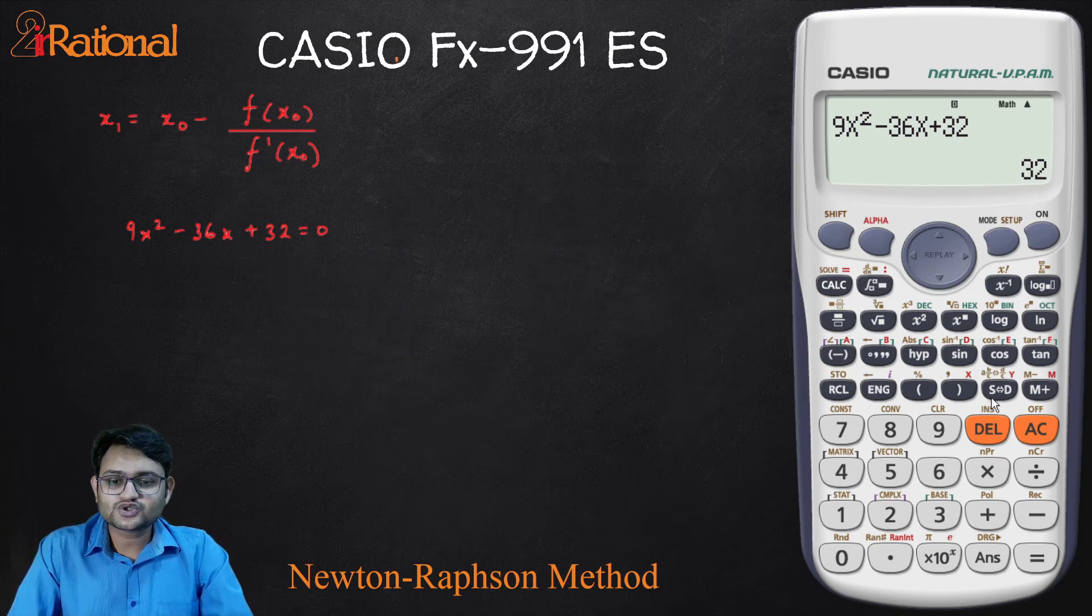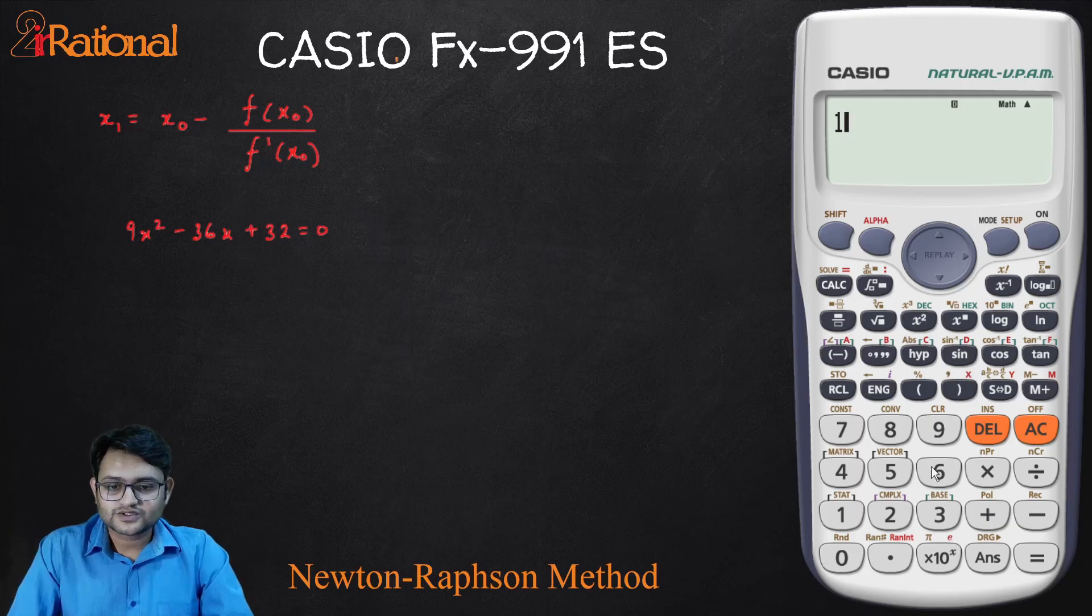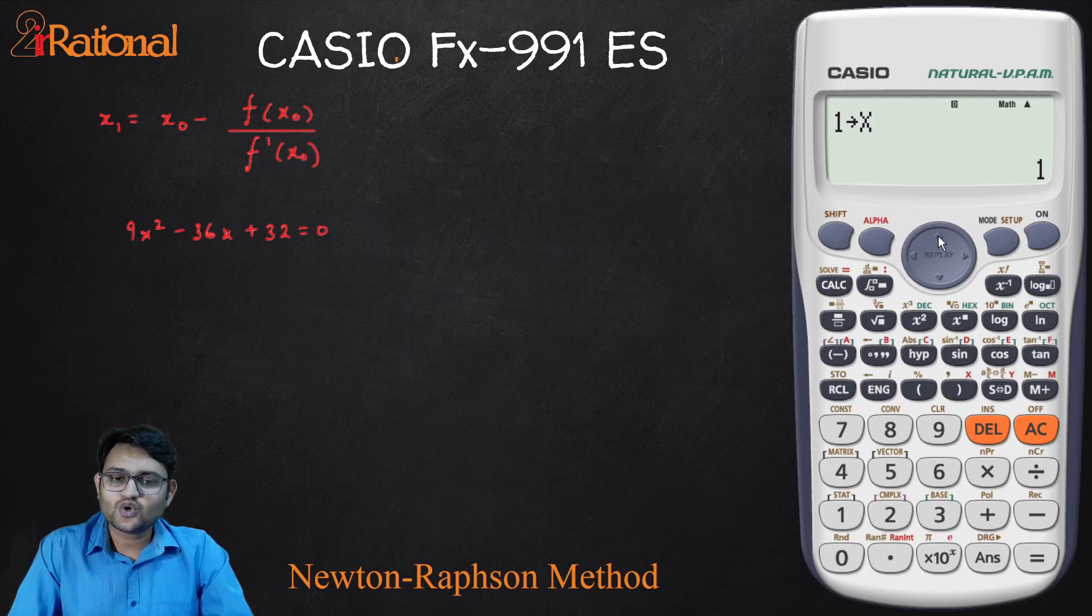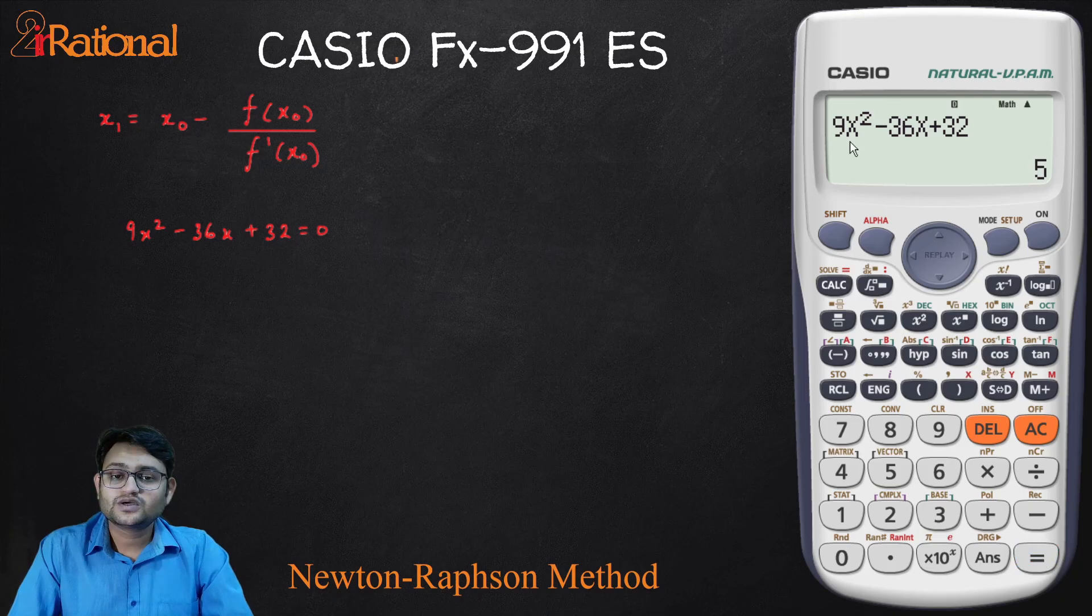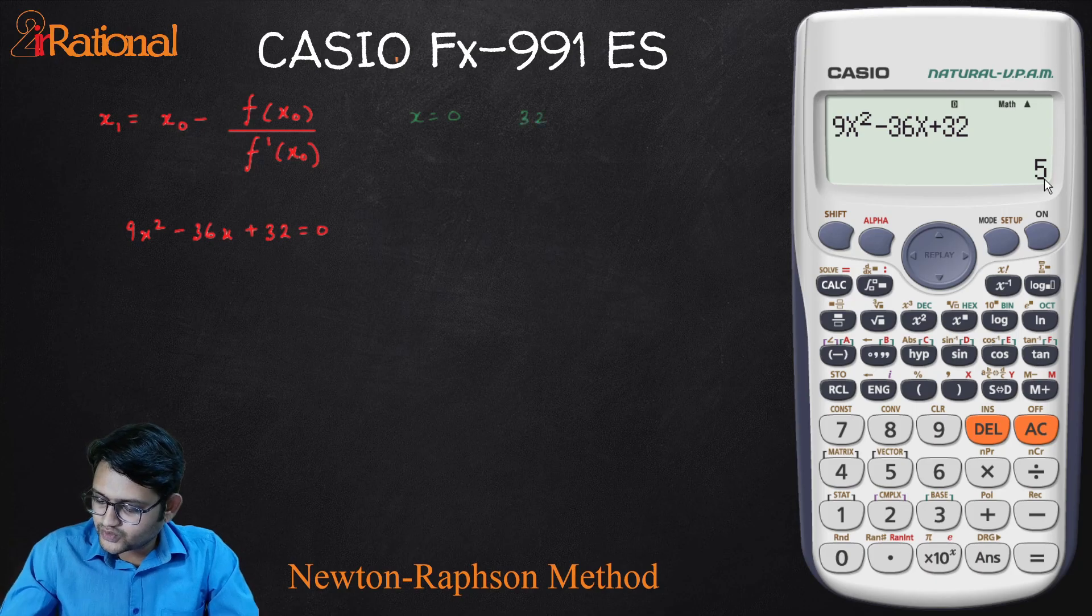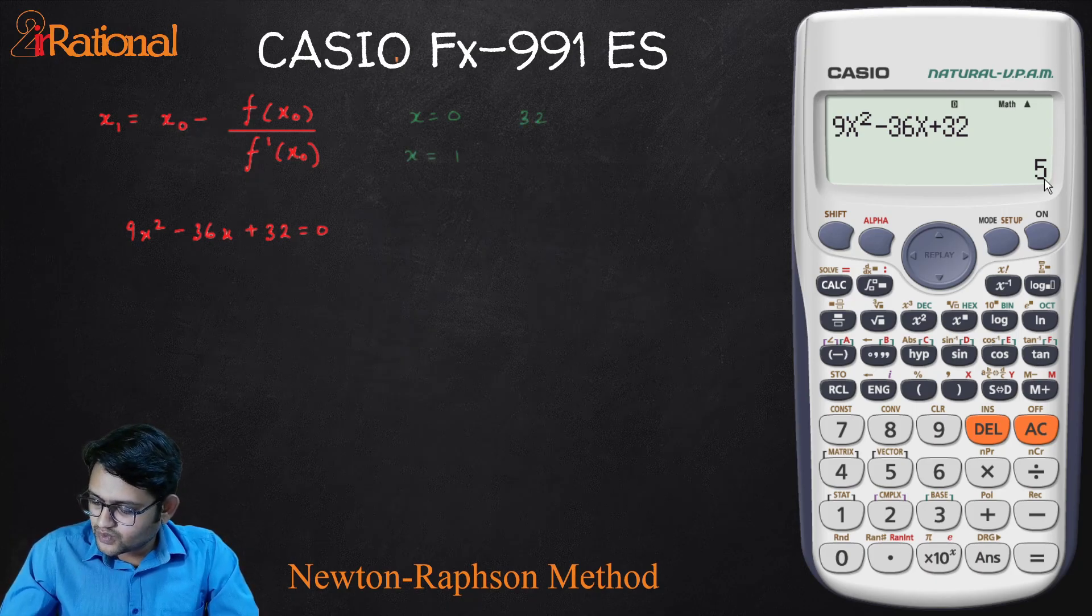Next, I will store again in x the value 1. So 1 shift RCL and this bracket close. 1 has been stored in x. Then I will use the navigation key to go up to the same equation. I will press equal to. Now it has substituted the value of x as 1 and I get the value 5. A few things that we have observed here. First, when I put x is equals to 0, I got 32. When I put x is equals to 1, I got 5.